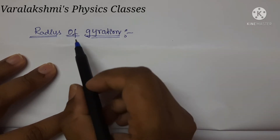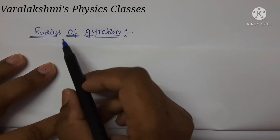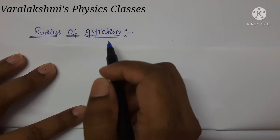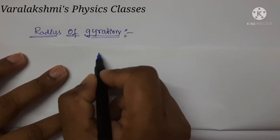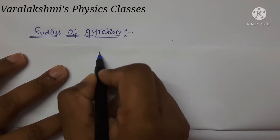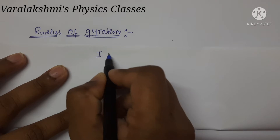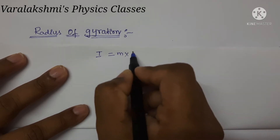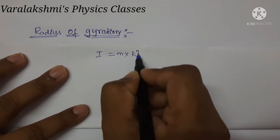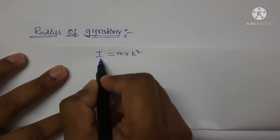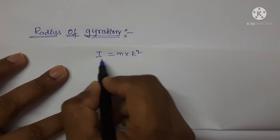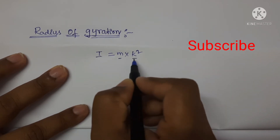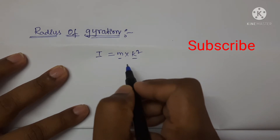Hi friends, in this video let us find the dimensions of radius of gyration. For that, let us consider the formula of moment of inertia, that is, I is equal to m multiplied by k squared. Here, I is the moment of inertia, m is the mass, and k is the radius of gyration.